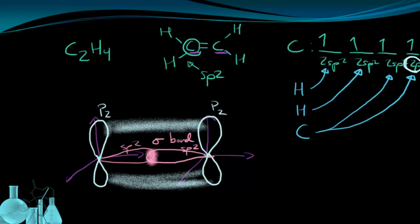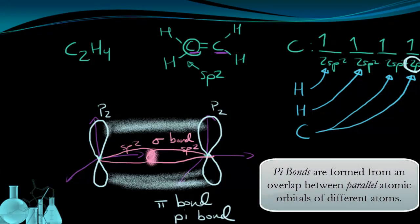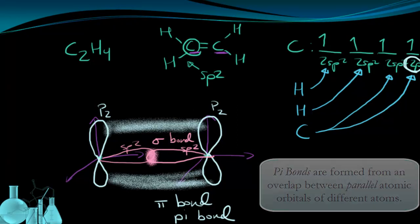And when that happens, we call that a pi bond. And this is the other kind of molecular bonding that can happen. The other kind of molecular orbital that can form. Sigma and pi.